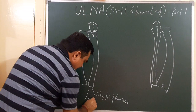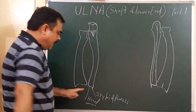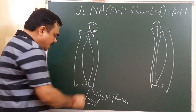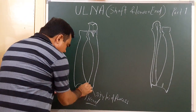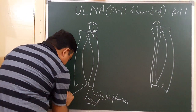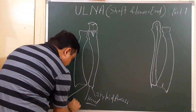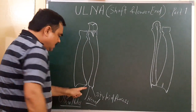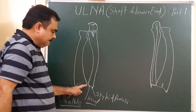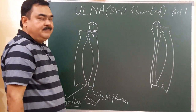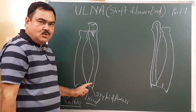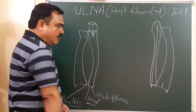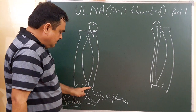This articular surface is the head of the ulna. The head of the ulna articulates with the ulnar notch of the radius. So it articulates through this and forms the inferior radio-ulnar joint.